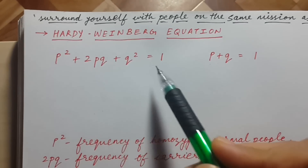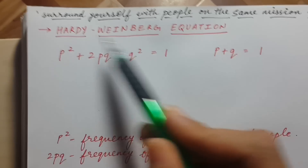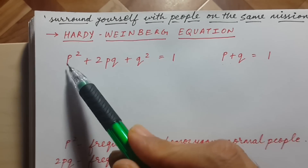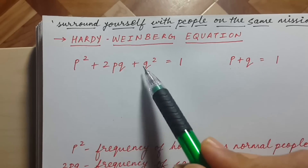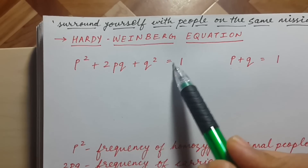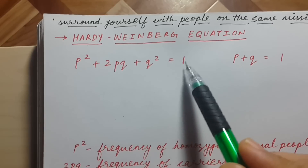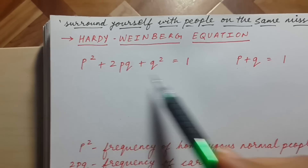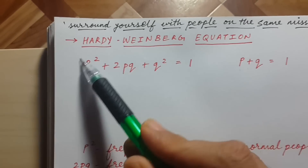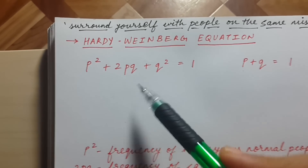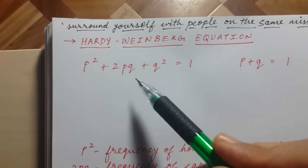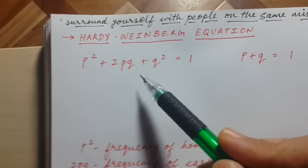So let's start. What is the Hardy-Weinberg equation? It is p² + 2pq + q² = 1. This equation has given panic attacks to a lot of students, but hopefully we will make it easier.